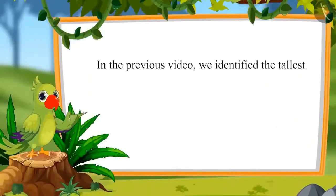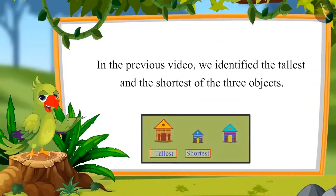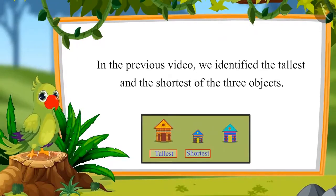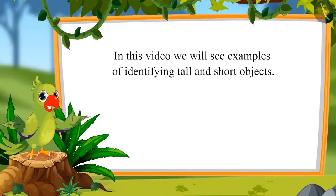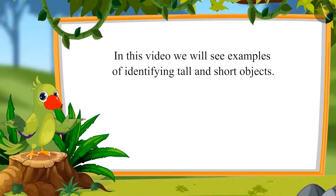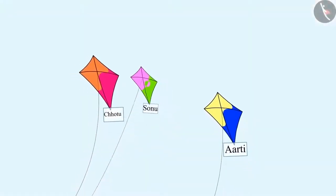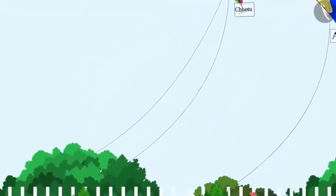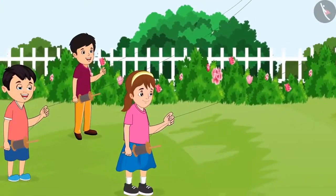So children, in the last video we identified the tallest and the shortest of three objects. In this video we will see examples of identifying tall and short objects. Today Chotu, Aarti and Sonu have come to fly kites in the park.